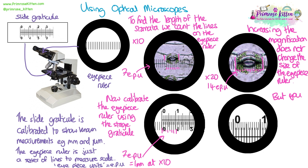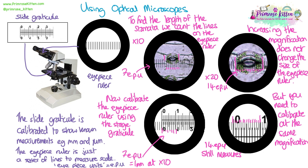When calibrating your eyepiece ruler, you must look at your slide graticule using the same objective lens you used to measure the sample. Using times 20 magnification, the slide graticule also appears double the size. So my 14 eyepiece units still line up with one millimetre — the stomata hasn't changed size at all. The key point is to use your eyepiece ruler to measure the length in eyepiece units, then calibrate it using the slide graticule at the same magnification.